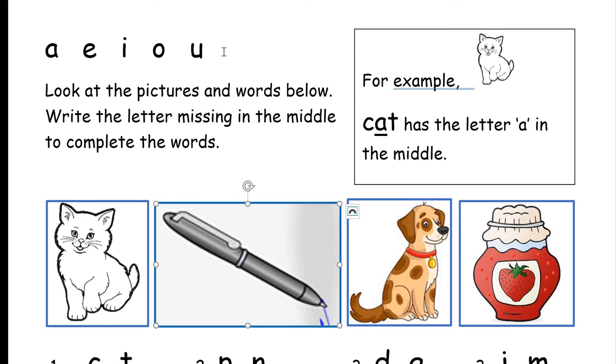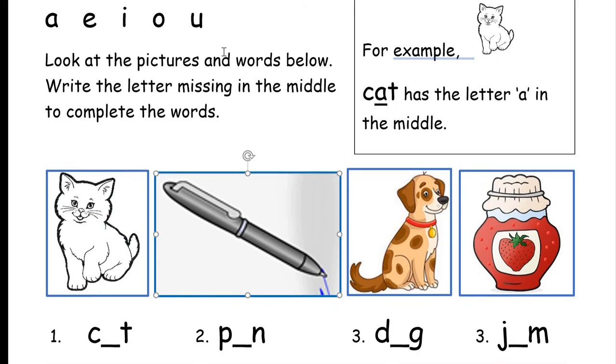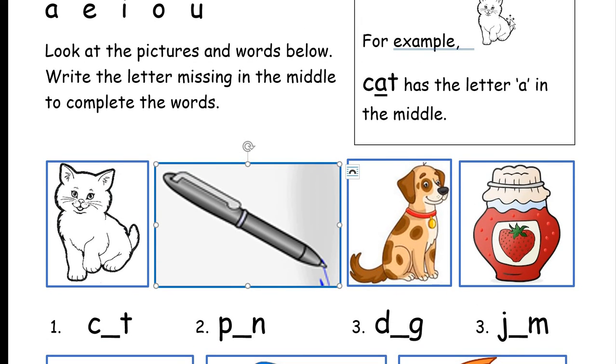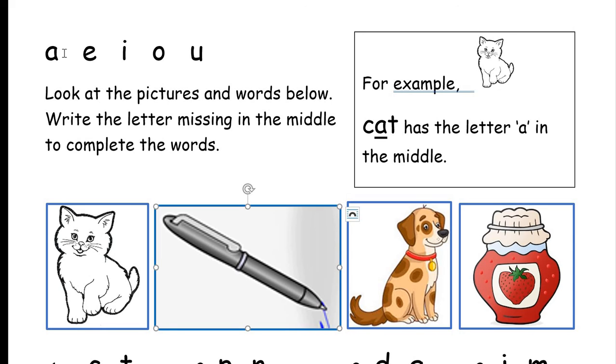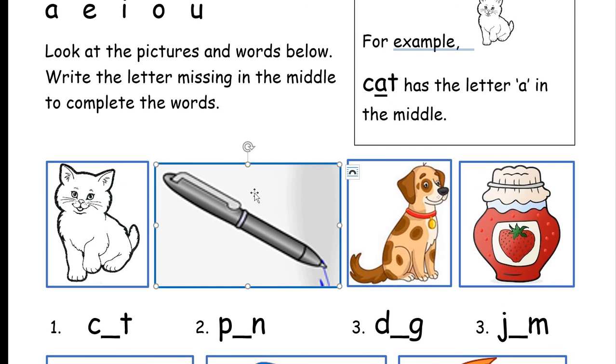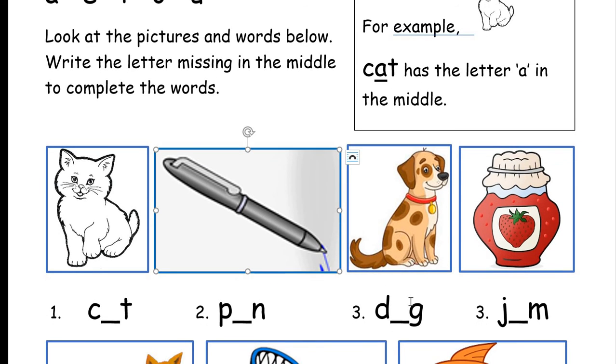So those sounds are going to be in the middle of the words that you're looking at. Okay, so for example, here we have a cute little cat, and it says cat has the letter A in the middle. Okay, so the letter you would put there is A, which makes the A sound because the word is cat. And this one, this is a pen. Pen, so which letter makes the E sound for pen. You have to use one of these letters, A, E, I, O, U. One of those five letters to find the missing middle letter in the word.